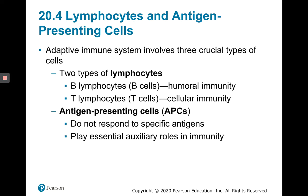The adaptive immune system involves three crucial types of cells: B lymphocytes, T lymphocytes, and antigen-presenting cells. There are three different types of antigen-presenting cells. B lymphocytes are associated with humoral immunity, whereas T cells are associated with cellular immunity. Antigen-presenting cells present antigens to B cells and T cells, but they don't respond to specific antigens themselves — instead, they play an auxiliary role in immunity.